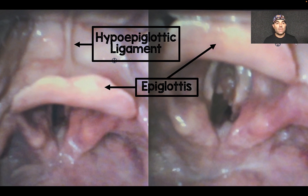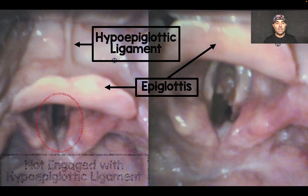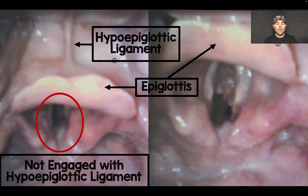What I want to show is that on the left I'm in the vallecular but I'm not really engaged with that hypoepiglottic ligament, and you can see what I'm able to view for my airway. But now just by making a simple little adjustment and sliding that laryngoscope down right at the base of where the epiglottis is